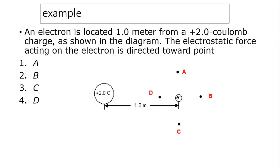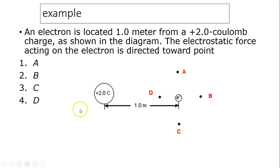Let's take a look at this example. An electron is located one meter from a positive two coulomb charge as shown in the diagram. The electrostatic force acting on the electron is directed toward which point? Here is an electron and here is a positive charge. These two oppositely charged objects attract each other, so the force will be going toward the positive charge. So it's directed toward D.